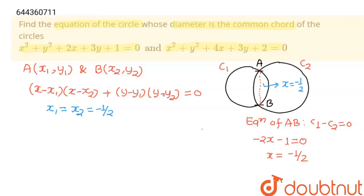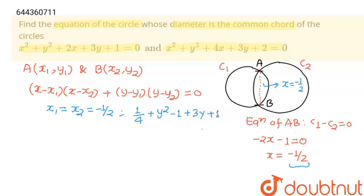Now we have to find y1 and y2. I am going to substitute x = -1/2 into the equation of circle C1. Putting x = -1/2 gives: 1/4 + y² + (-1/2)·2 + 3y + 1 = 0.